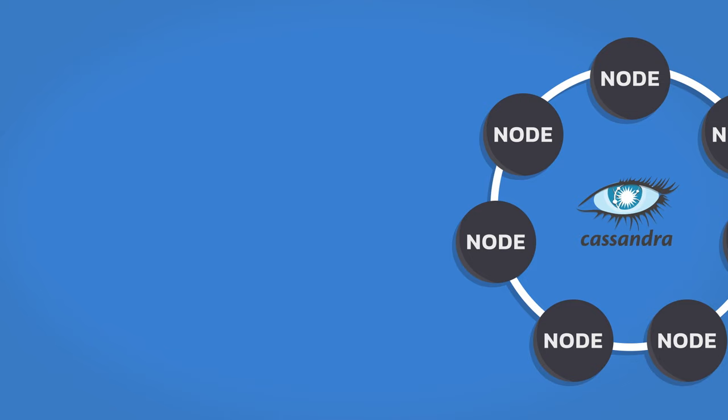There are some other things you should know about Cassandra. One, this is a petabyte level database — that is a one followed by 15 zeros. It's one thing to be able to store that amount of data, but it's another entirely to do so while maintaining performance at scale, something that Cassandra excels at.